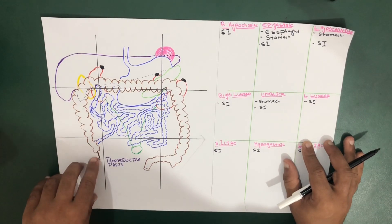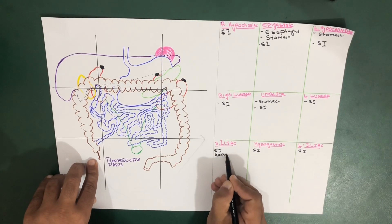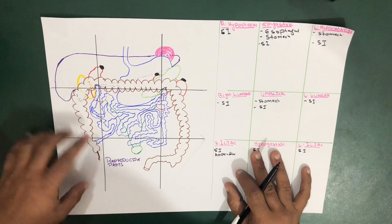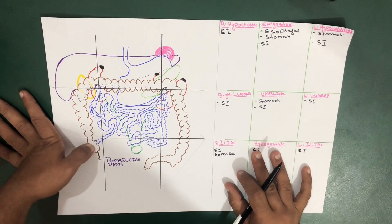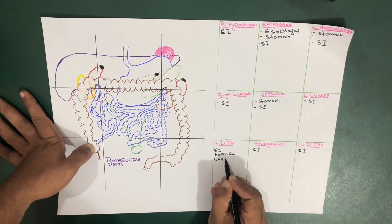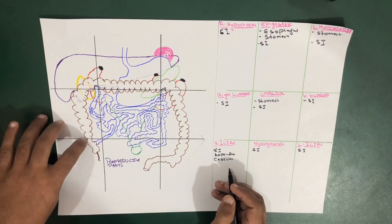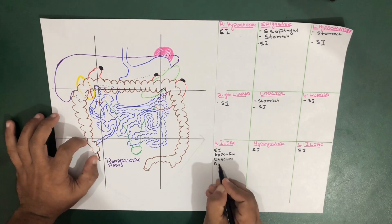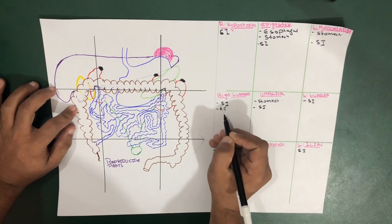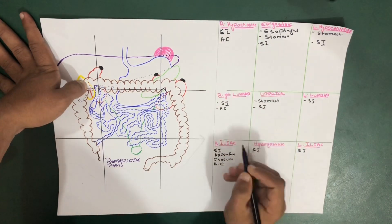Let's mention the appendix — the appendix is present in the right iliac region, and it is also a part of the large intestine. From the appendix, this part of the large intestine is called the cecum. Then we have the ascending colon starting here and moving upward through the right iliac and right lumbar regions.